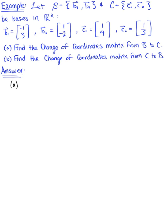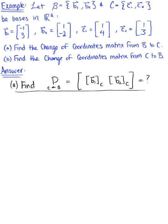Starting with part A, we are asked to find the change of coordinates matrix from basis B to basis C. By definition, this is the matrix defined by the coordinate vectors of basis B relative to basis C. So the first column vector is the coordinates of vector B₁ relative to basis C, and the second column vector is the coordinates of vector B₂ relative to basis C.